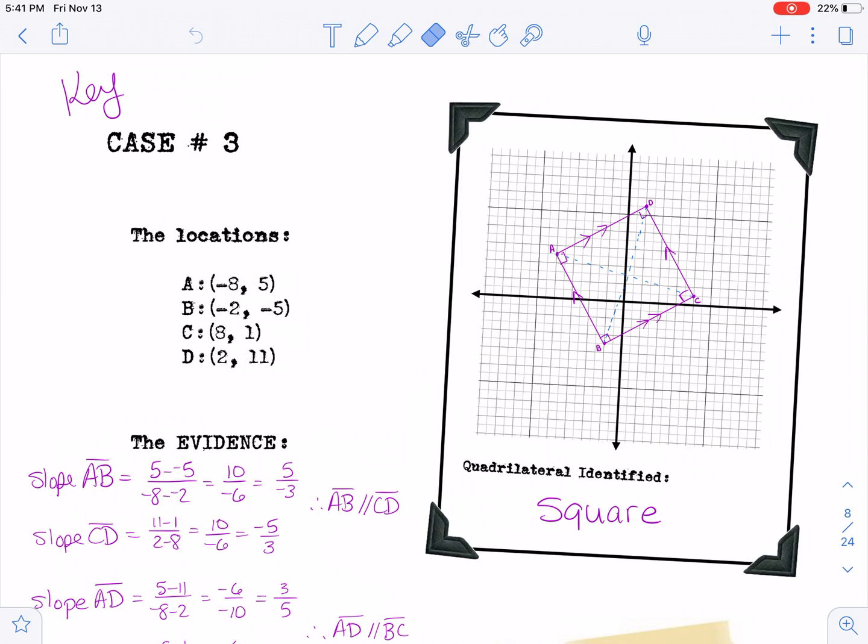So in order to prove that something is a square, you can show that all four of the angles are right angles and then you can show that all four of the sides are congruent, which would require here the distance formula four different times.